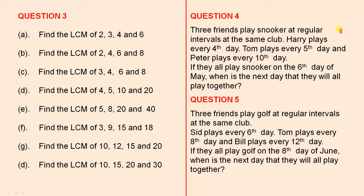Three friends play snooker at regular intervals at the same club. Harry plays every fourth day, Tom plays every fifth day, and Peter plays every tenth day. If they all play snooker on the sixth day of May, when is the next day that they will all play together? This is an interesting question and a perfect candidate for the lowest common multiple.